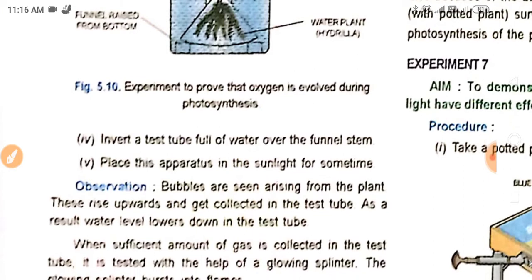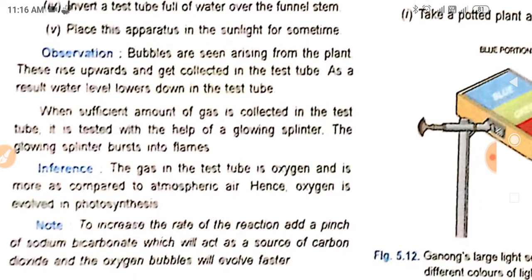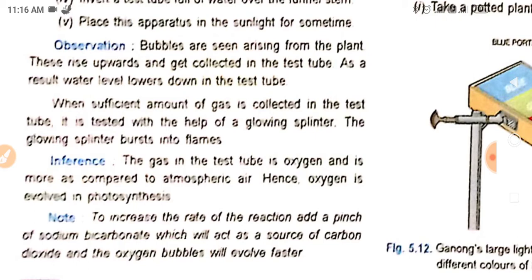Next, invert a test tube full of water over the funnel stem and place the apparatus in the sunlight for some time. What do you observe? Bubbles are seen arising from the plant. These rise upwards and get collected in the test tube. As a result, the water level lowers down in the test tube.